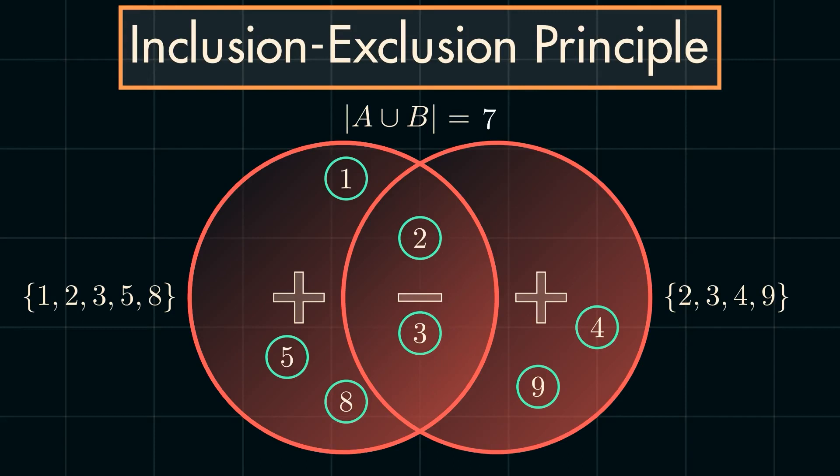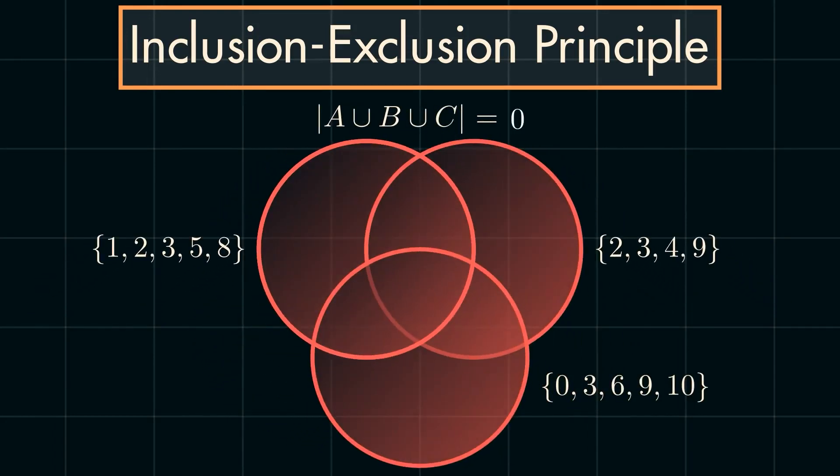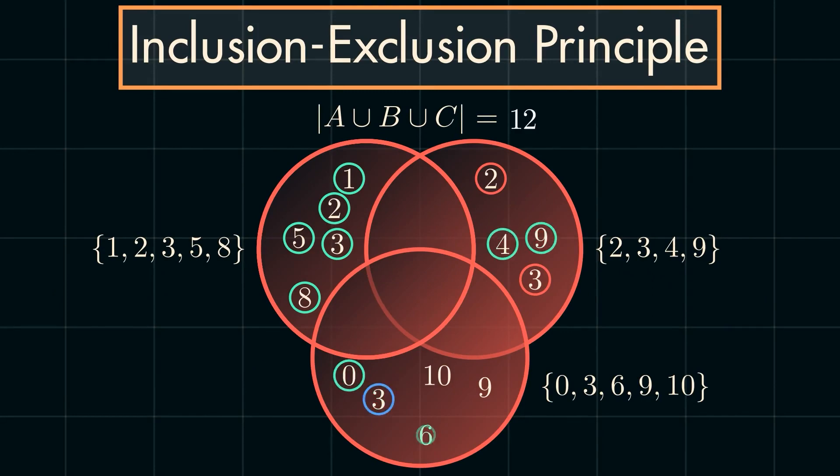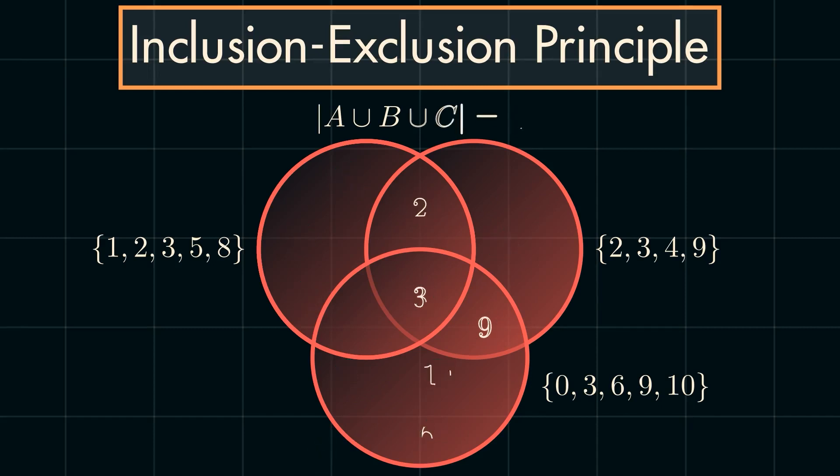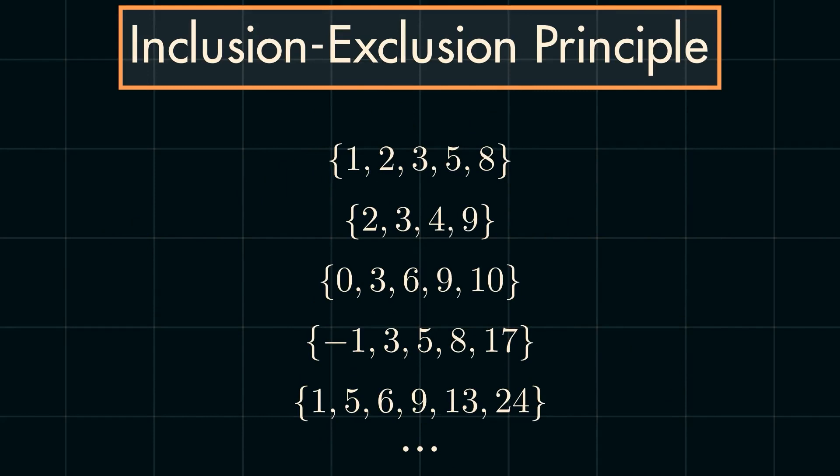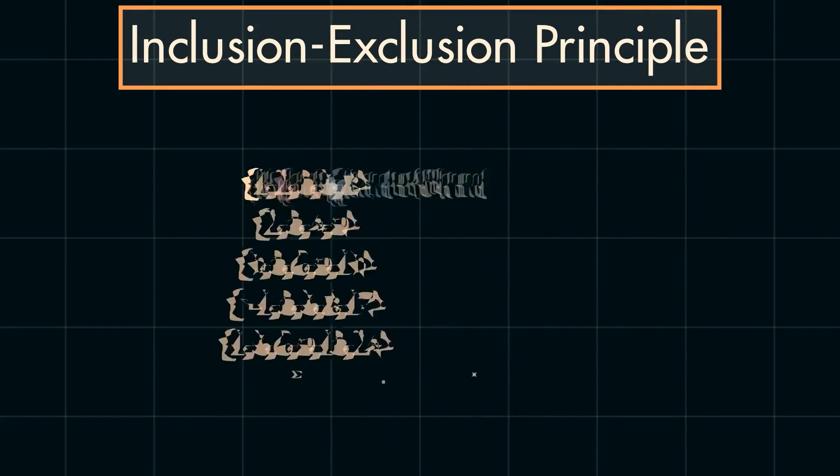We can do the same thing for even more sets. For example, consider an additional set of numbers {0, 3, 6, 9, 10}. Again, we want to find the number of unique elements among these sets. And, we can start by adding the number of elements in each set. Like before, we are again double-counting elements in the intersection between each set, so we can subtract these from the count. However, by doing this, we've actually removed more than we needed to, and finally need to add back elements that are shared between all the sets. The pattern repeats when considering 4, 5, and even more sets.